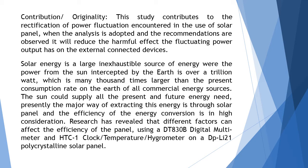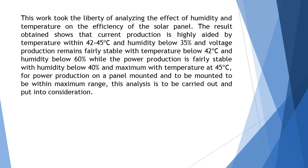Presently the major way of extracting this energy is through solar panels, and the efficiency of the energy conversion is of high consideration. Research has revealed that different factors can affect the efficiency of the panel. Using a DT-830B digital multimeter and HTC-1 clock/temperature/hygrometer on a DPLE-21 polycrystalline solar panel, this work analyzed the effect of humidity and temperature on the efficiency of the solar panel.